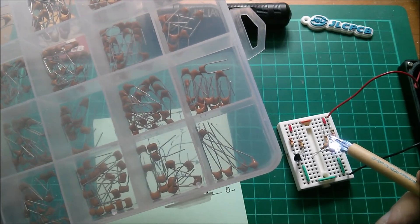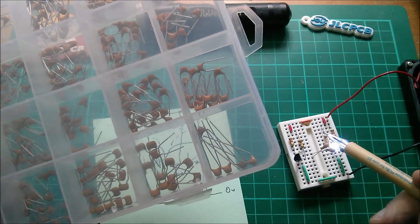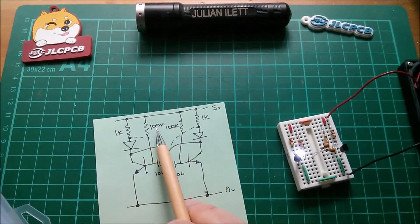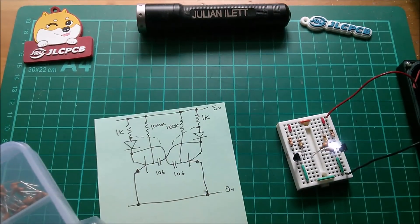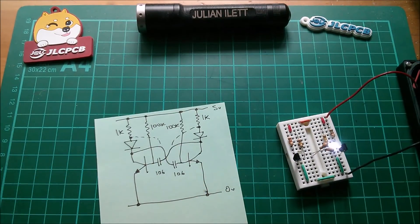So to slow this down, I'm going to increase the value of these two base resistors, these two resistors here, 100K. I'm going to increase them to one megaohms.